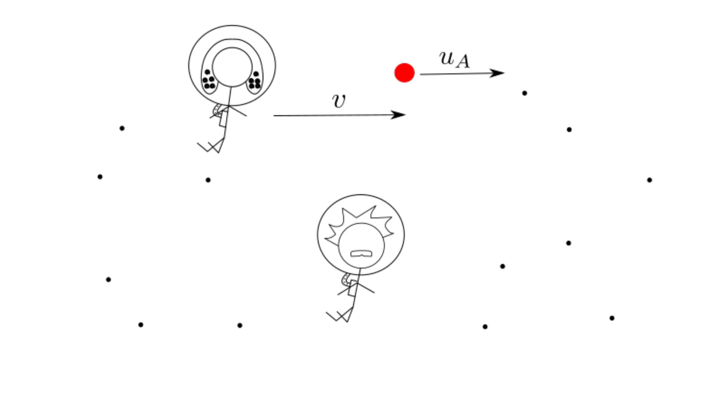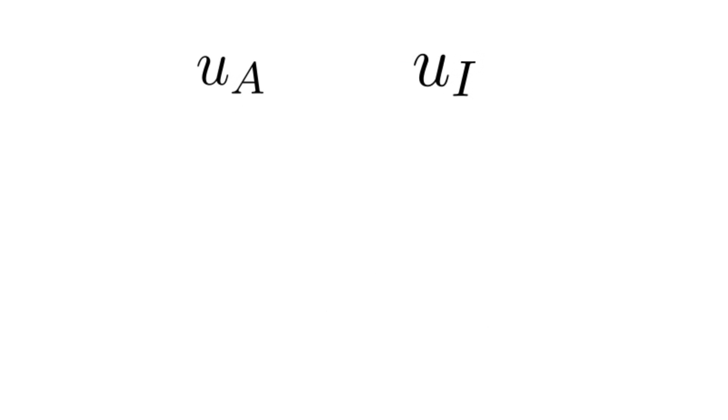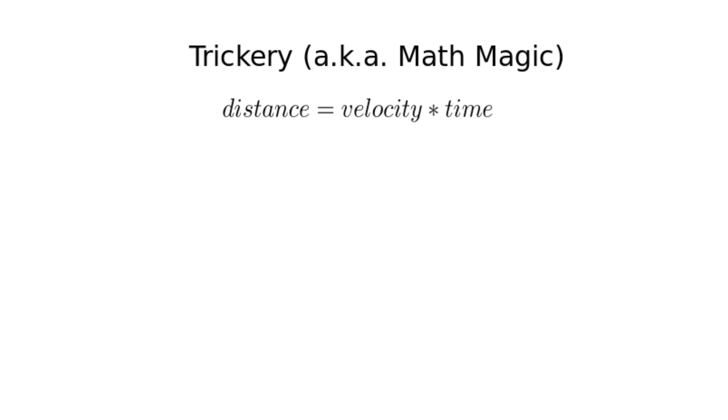How can we find a relationship between the two velocities ua and ui when our transformations only give us a relationship between observed distances? Well, we have to be a little tricky about it. We know that a distance traveled by a moving object is given by its velocity multiplied by the time it's been traveling. If you don't believe me, you can just look at the units. Velocity is distance per time multiplied by time gives us distance. So we can rewrite delta xi as ui times t and delta xa as ua times t.